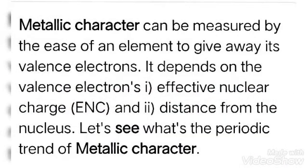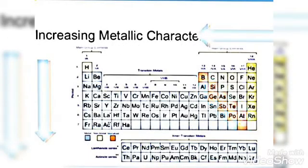Metallic character can be defined as the ease with which an atom can lose its electrons from the valence shell. It depends upon the effective nuclear charge and the distance between the nucleus and the outermost shell. Metallic character increases in a group from top to bottom because atomic size increases, so the influence of the nucleus on the outermost shell decreases.